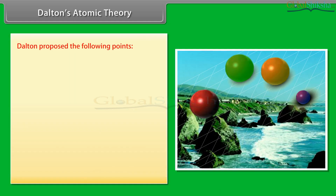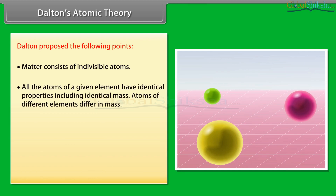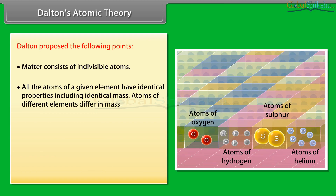Dalton's Atomic Theory: Dalton proposed the following points. First, matter consists of indivisible atoms. Second, all atoms of a given element have identical properties including identical mass. Third, atoms of different elements differ in mass.